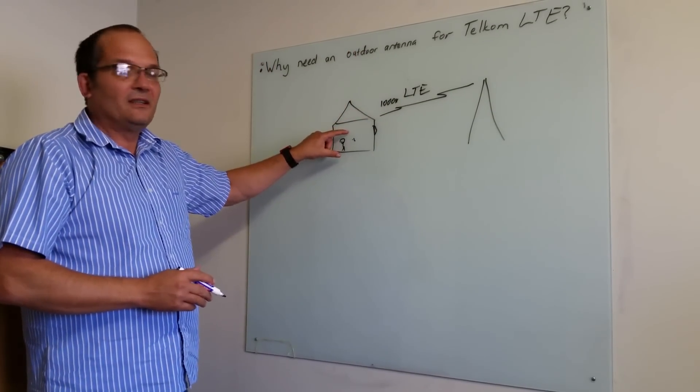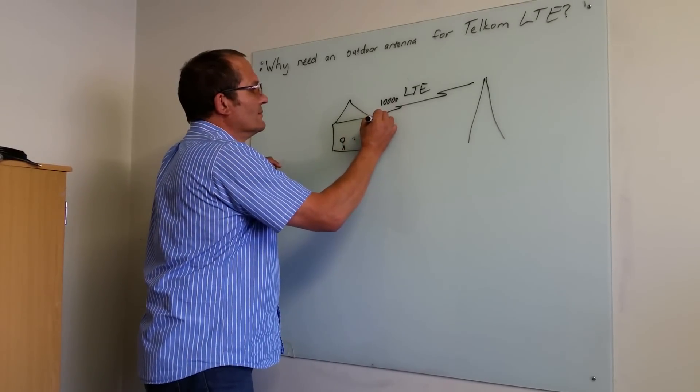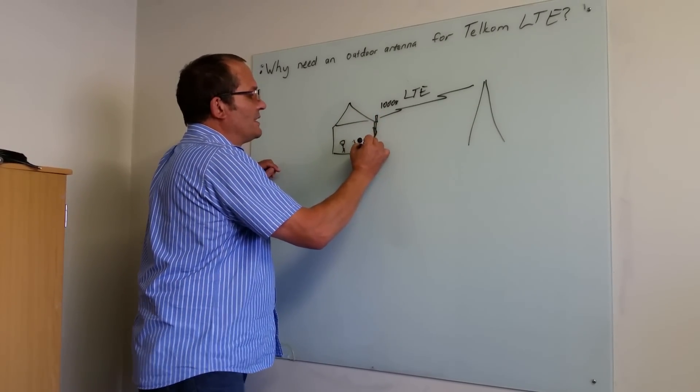You want to get internet indoors, so you put an antenna up here, take cables down and you connect it here.